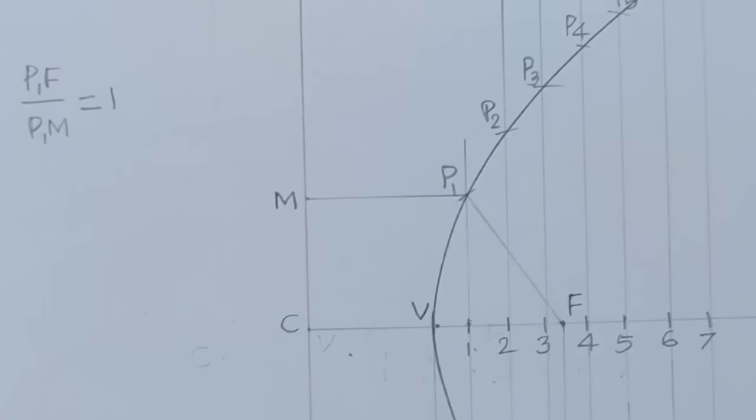Here, you can see P1F is equal to C1 because by taking distance equal to C1 in compass and F as center, we got P1 point on first line and P1M is equal to C1. Therefore, P1F by P1M ratio is 1.